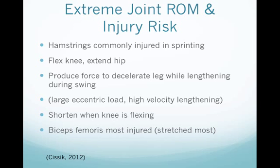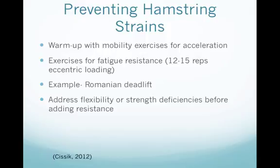Resisted sprinting comes at a cost — there's a huge injury risk if you're not conditioned for sprinting. The hamstrings are most commonly injured because they perform two actions simultaneously: flexing the knee and extending the hip, creating huge force production. There's also a force produced to decelerate the leg while it's lengthening during the swing phase, resulting in a large eccentric load and high-velocity lengthening. The biceps femoris is most injured because it's stretched the most. We can prevent hamstring strains by getting an ample warm-up with hip and calf mobility exercises, performing fatigue-resistance gym work in the 12-to-15 rep range with eccentric loading like Romanian deadlifts, and addressing any inflexibility or strength deficiencies before adding resistance to sprinting.